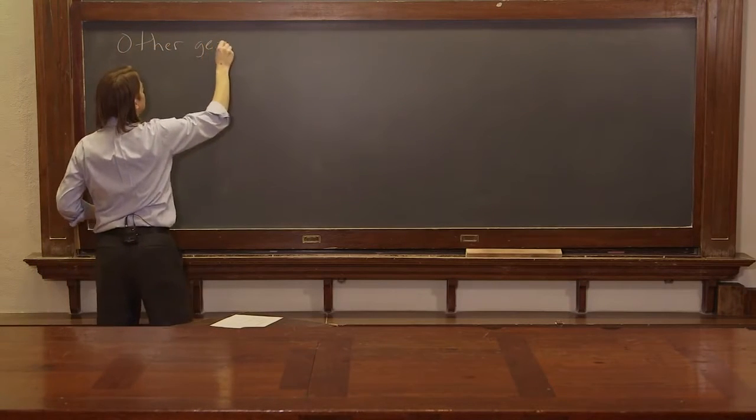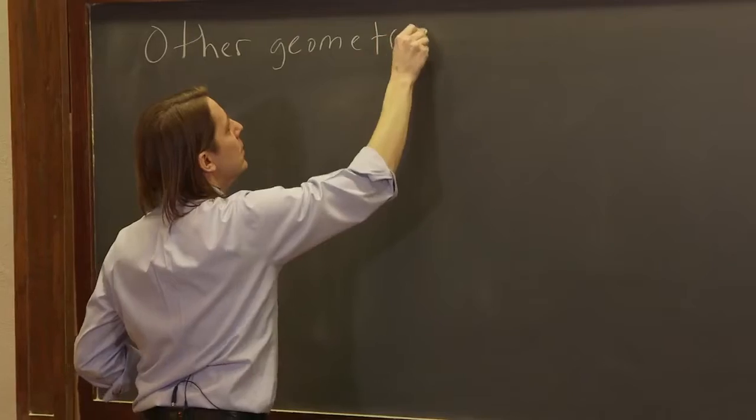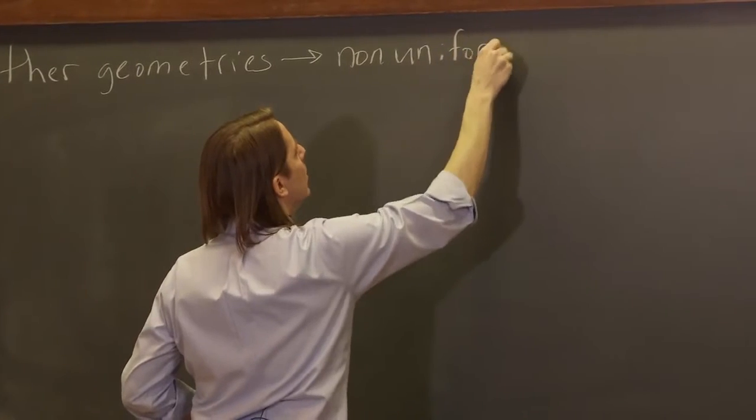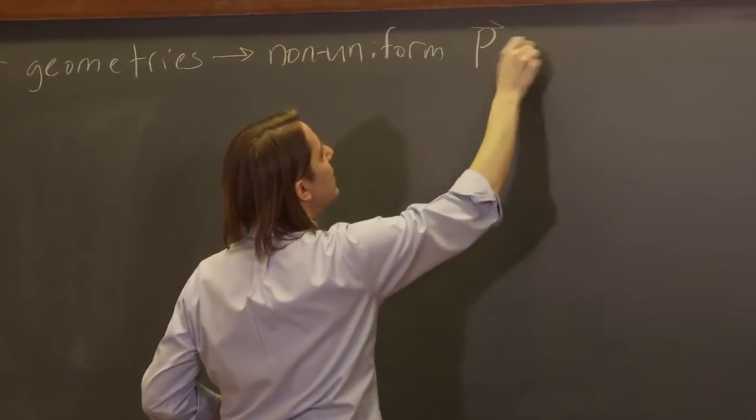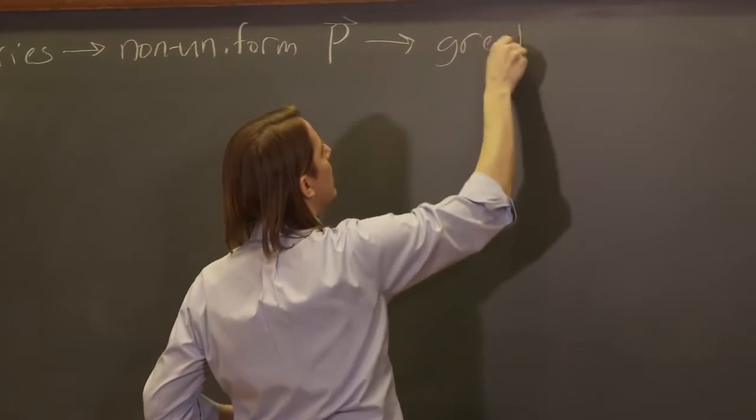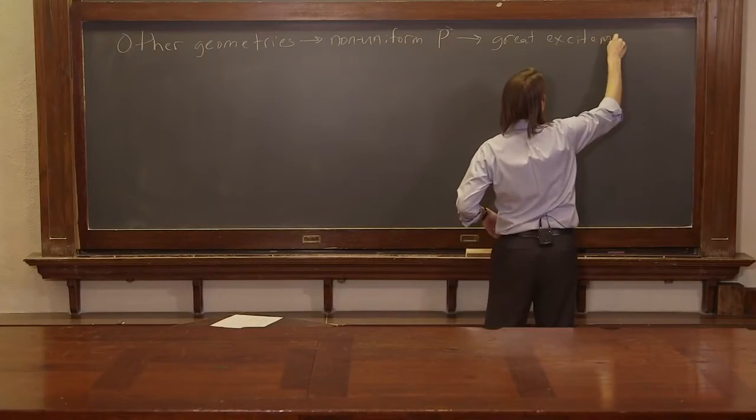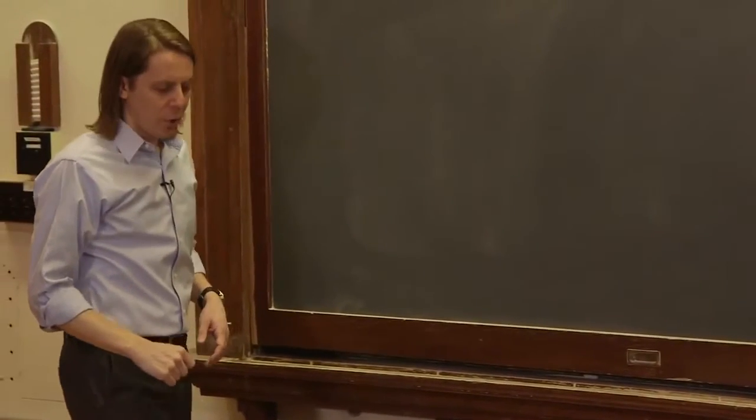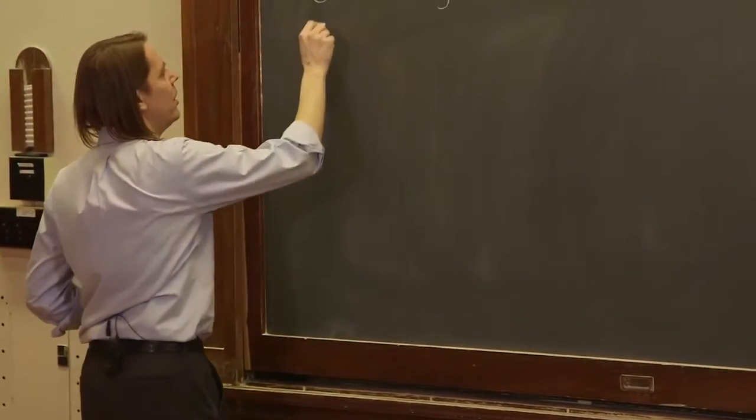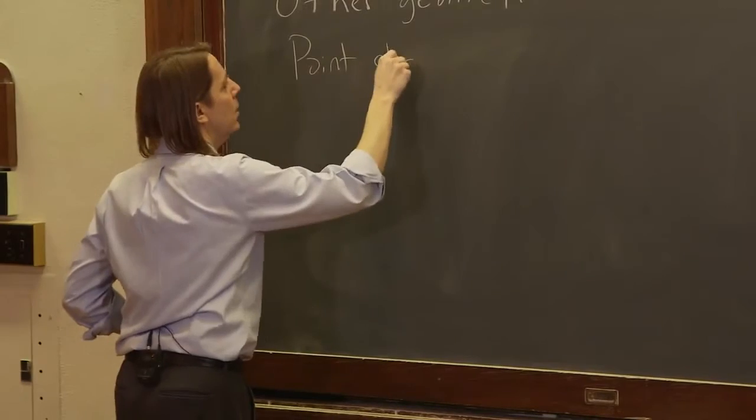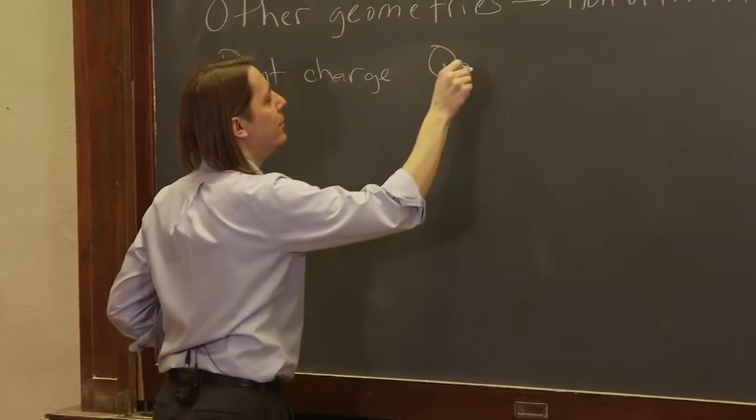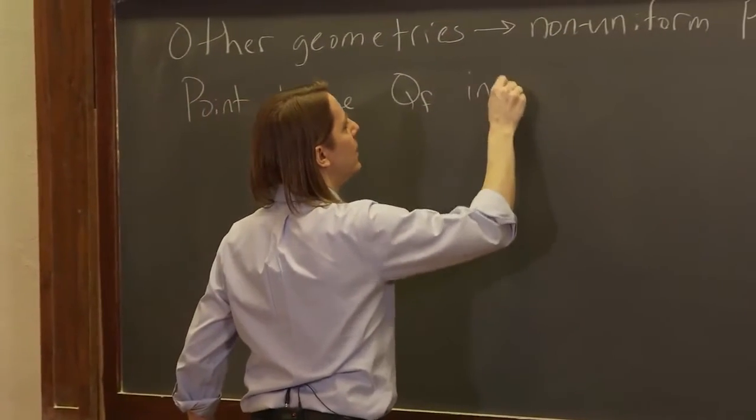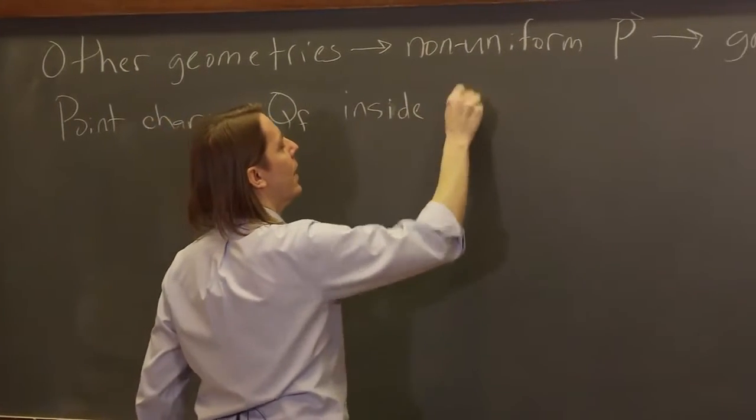So if you do other geometries, those can lead to non-uniform P, which can lead to great excitement. We're going to see new things when we let our polarization become non-uniform. All right, so let's just pick another geometry. Let's put a point charge, and I'm going to call it Q free, because this is the charge that creates the effect, Q free, inside a dielectric sphere.